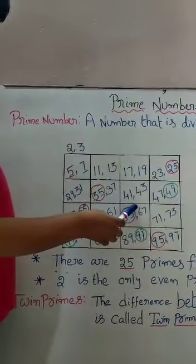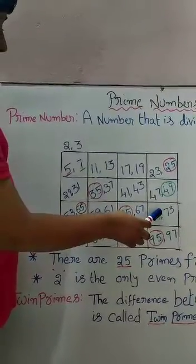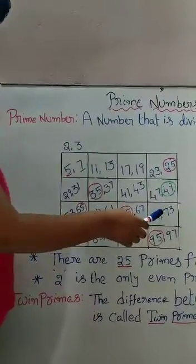65 plus 2 is 67. 67 plus 4 is 71. 71 plus 2 is 73. 73 plus 4 is 77.